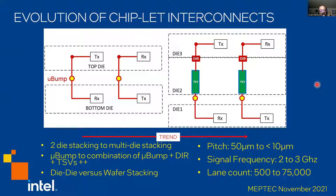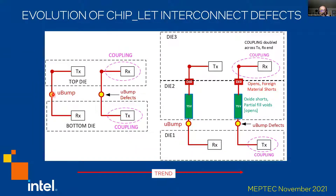Now let's look at how the interconnect is trending. We talked about one die on top of another with a micro bump connection. There is a lot of work going on, not only at Intel but outside, where multiple dies are being stacked one on top of the other. For example, one scenario has die 1, die 2, and die 3, with a micro bump connection between die 1 and die 2, then TSVs and a direct metal-to-metal connection between die 2 and die 3. The only reason I show this is to illustrate how the complexity is increasing, as the pitch decreases, lane count increases, and signal frequency increases.